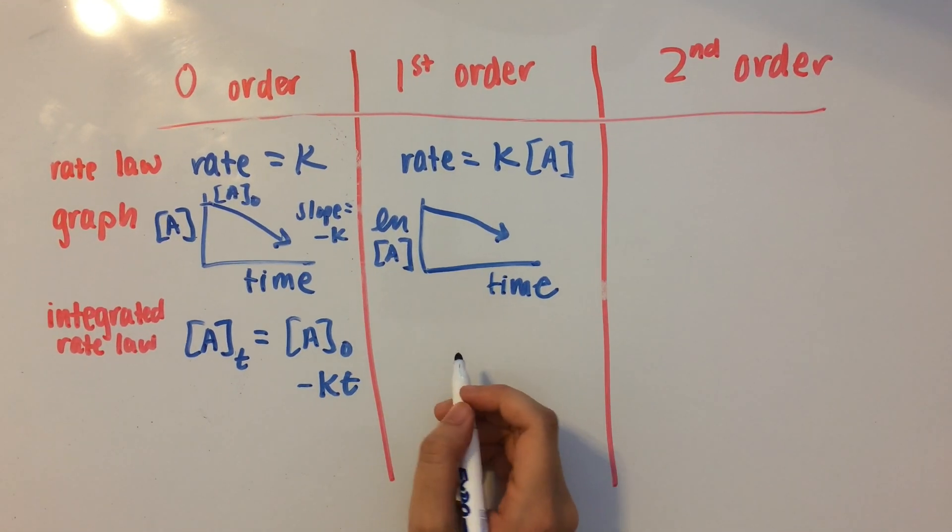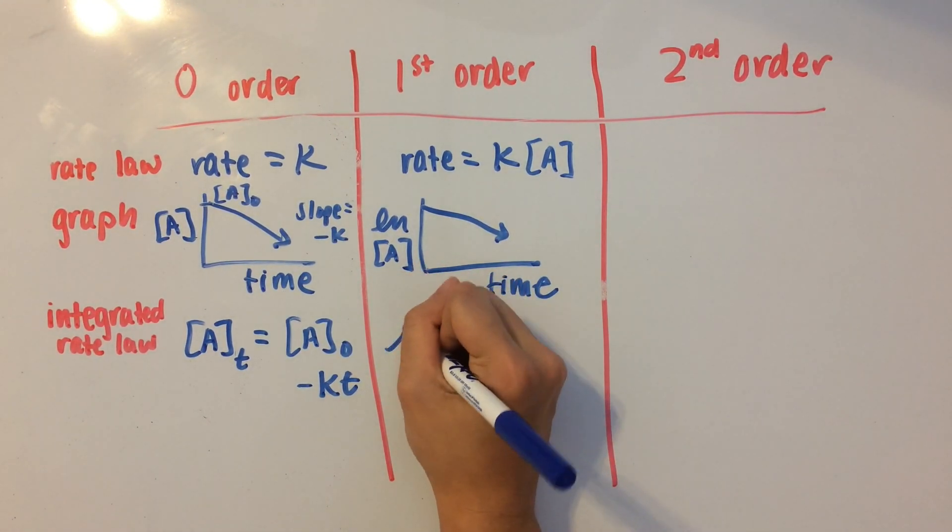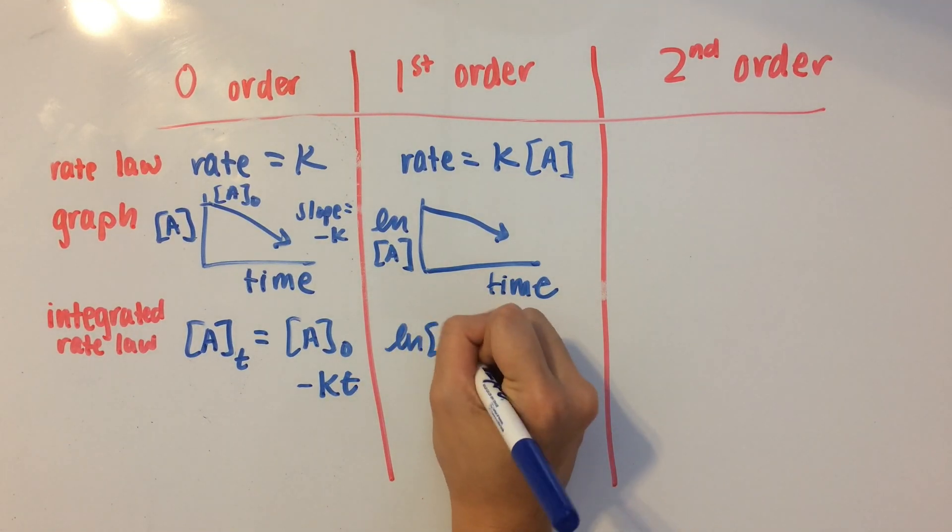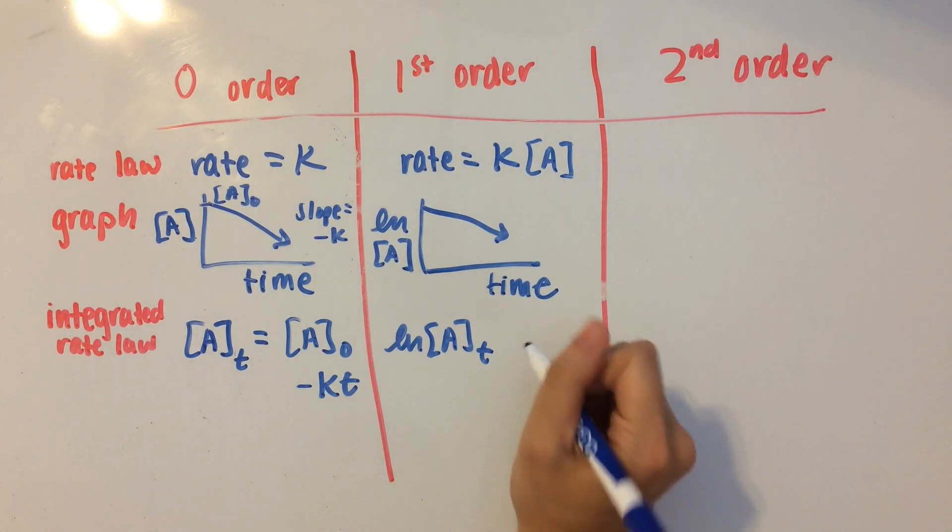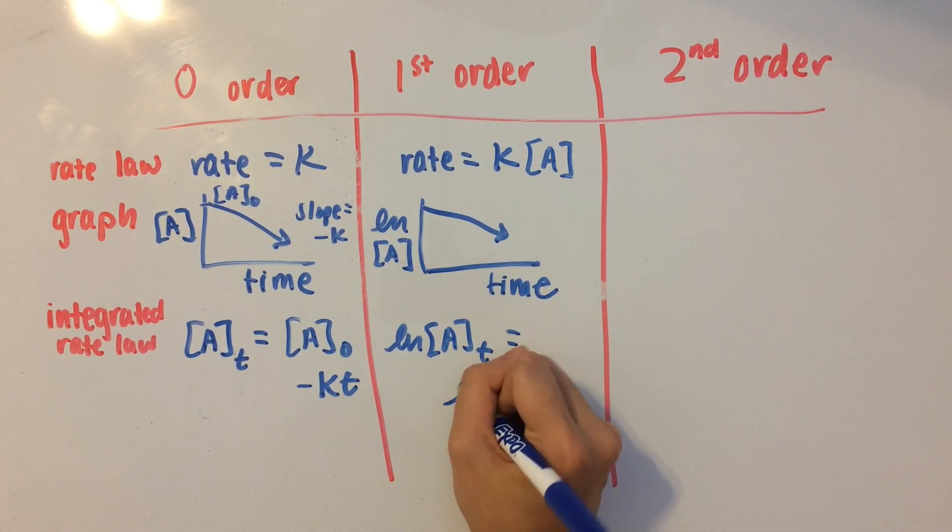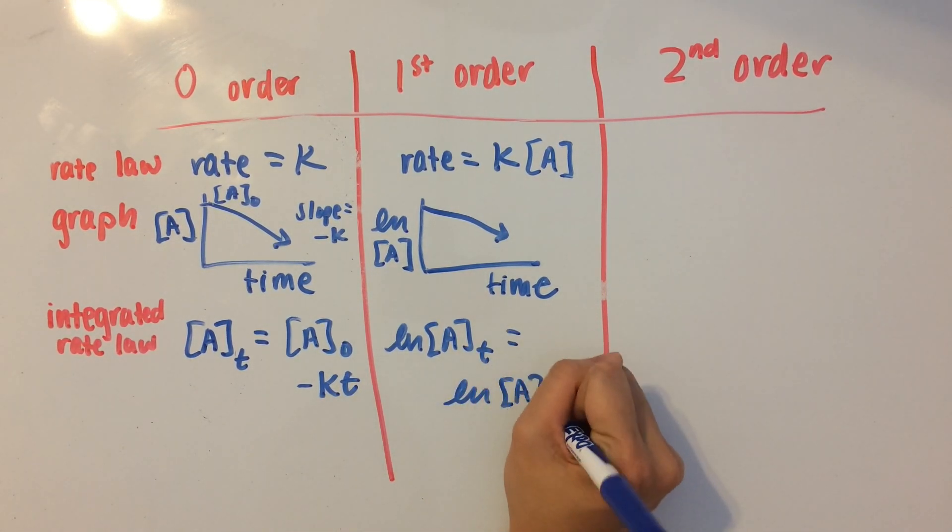Now for the integrated rate law, we have concentration of A at a particular point equals natural log of concentration, or initial concentration, minus kT.